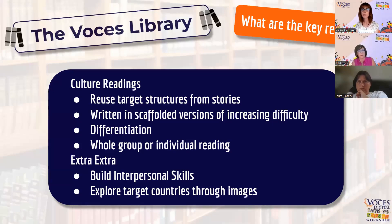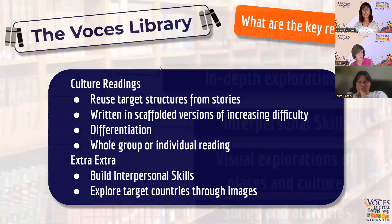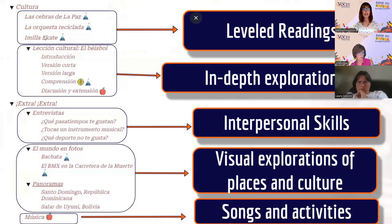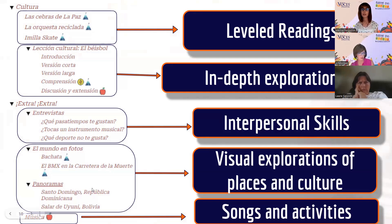In the Extra Extra section, students build interpersonal skills and explore target countries through images. You've got your three leveled embedded readings, then an actual cultural lesson — an in-depth exploration of one topic. The Extra Extra section builds interpersonal skills through interviews and accompanying activities, two types of visual explorations of places and culture within the target country, and music so you can go further with songs and related activities.